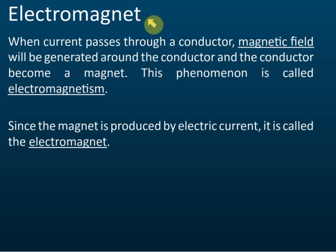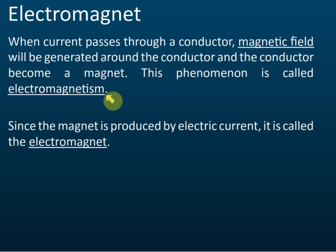What is an electromagnet? When current passes through a conductor, a magnetic field will be generated around the conductor and the conductor becomes a magnet. As long as there's current, it will generate a magnetic field. This phenomenon is called electromagnetism — 'electro' means electric, so it means that electricity can produce magnetism.